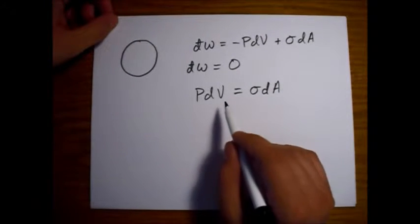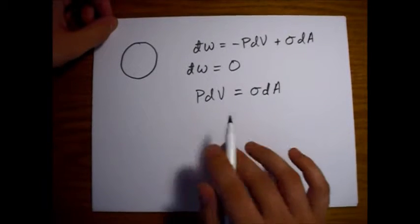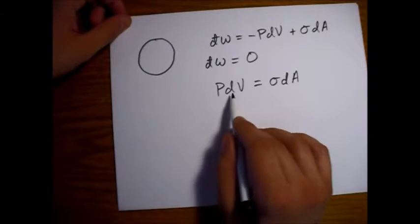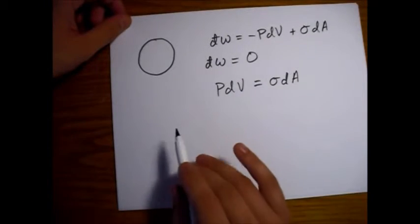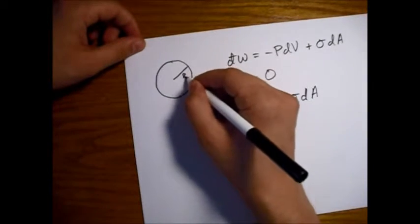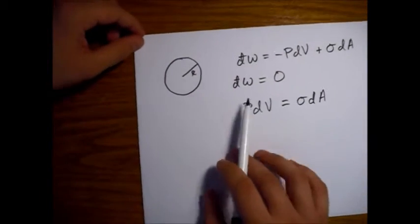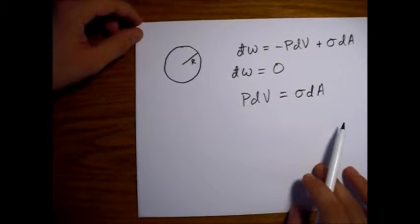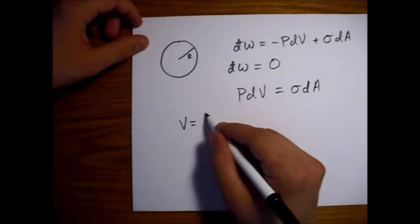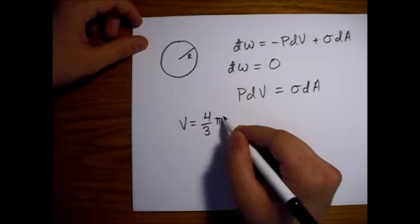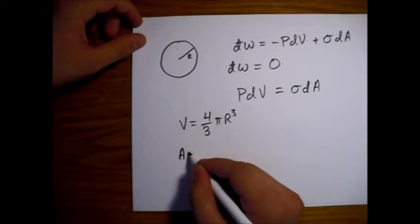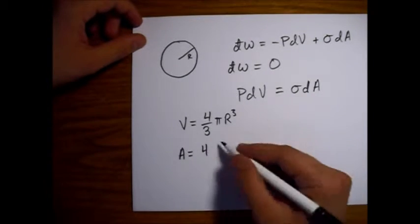So what we're going to do is just look at the volume and the area here and we're going to look at that in terms of the radius of this drop of water. So for a sphere we know that the volume is equal to four-thirds pi times the radius cubed and the area is equal to four pi r squared.